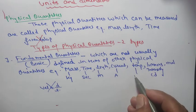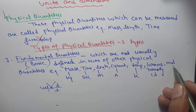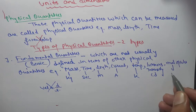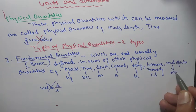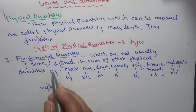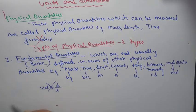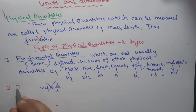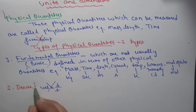Luminous intensity is in candela, temperature in Kelvin, and mole of substance in moles — these will be explained later. All these are fundamental quantities. Now number two: Derived units.